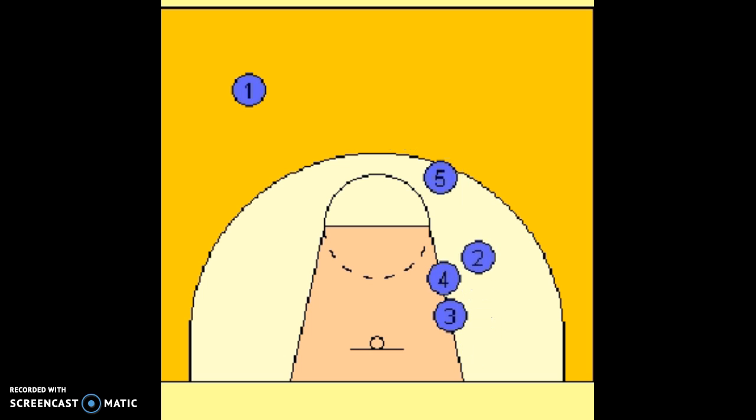So as soon as that happens, four is now going to set a screen for three who's going to pop out as well onto the perimeter for a shot, potentially.